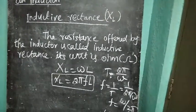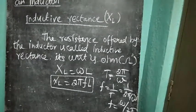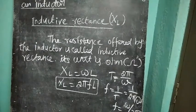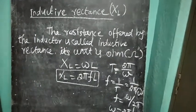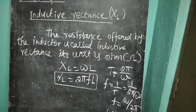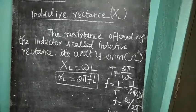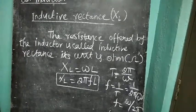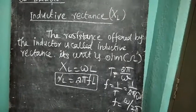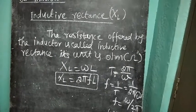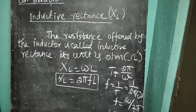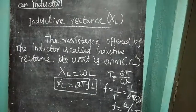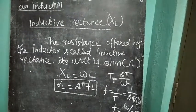Inductive reactance XL — XL stands for inductive reactance. The resistance offered by the inductor is called inductive reactance. Its unit is Ohm. XL is equal to omega L, that is XL equal to 2 pi F L, where F is frequency and L is inductance.